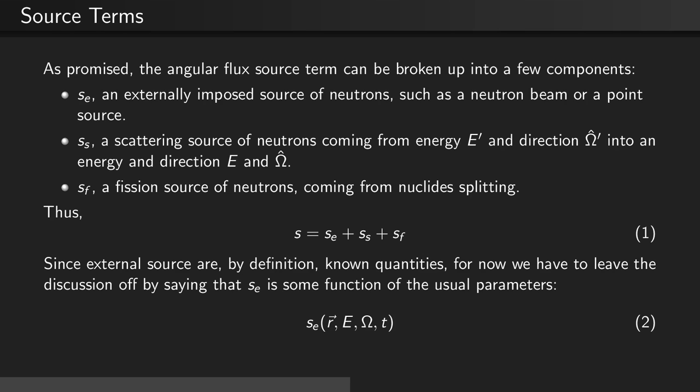Since external sources are, by definition, known quantities ahead of time that are defined in the problem, we're going to leave the discretion and just say that S of E is some function of the normal parameters. That is, the external neutron source is a function of position, energy, direction, and time.